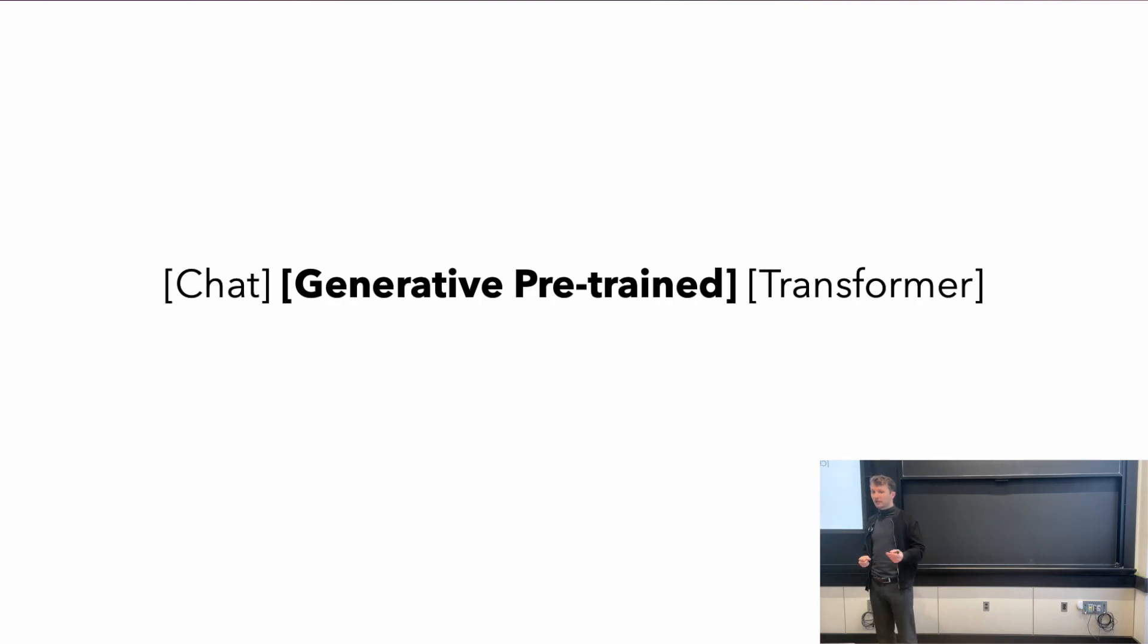First we have chat—the chat aspect we'll talk about later. Then we have generative pre-trained, and then transformer. We'll start talking about generative pre-trained, which I think is the most important aspect. The length of the concepts here correspond to how important they are for ChatGPT.